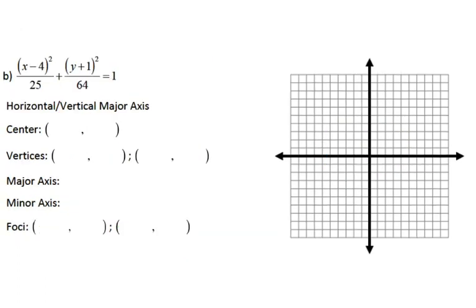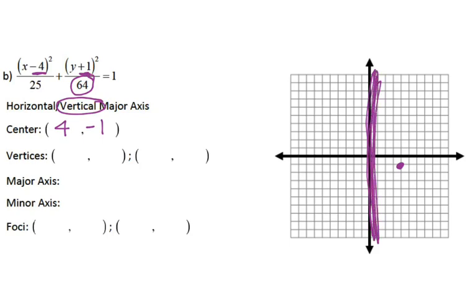Let's do another one. I'll look at my bigger number to figure out what kind of major axis I have. The bigger number is underneath the Y, so I'm going to have a vertical major axis. This time I do have numbers in my parentheses. My X coordinate of the center comes from the X parentheses — taking the opposite just like with parabolas, since it's X minus H, so X minus 4 means H is 4. My Y coordinate is negative 1. I'll plot my center at (4, −1). Since I have a vertical major axis, I'm moving vertically, so my X values for my vertices and foci all stay the same; it's the Y value I'm going to adjust.